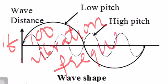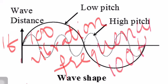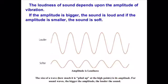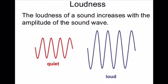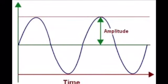If a body makes 100 oscillations in one second, its frequency is 100 hertz. The next important term, on which the loudness of sound depends, is amplitude. The maximum displacement of a vibrating object from its mean position is known as its amplitude. Amplitude determines loudness or volume: larger amplitude means louder sound, and smaller amplitude means softer sound.